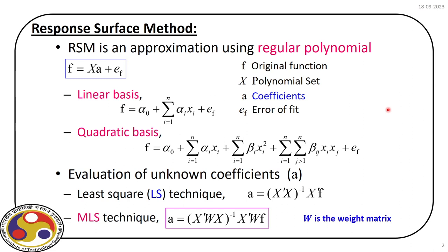Response surface using a regular polynomial, say f, has the form x — that is the basis vector — times a, plus ef, that is the error. In this modeling, we start with an original limit state which may be in implicit form, and then replace it using a polynomial set. We discuss algebraic polynomials and how to fit them.